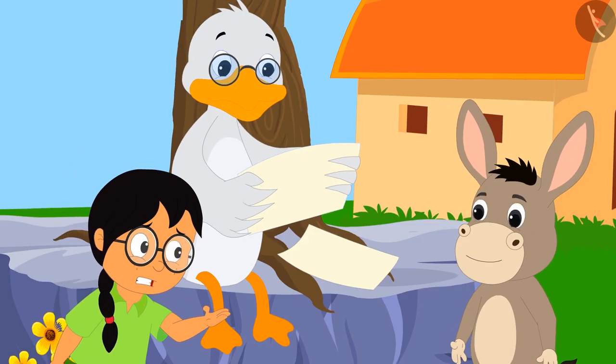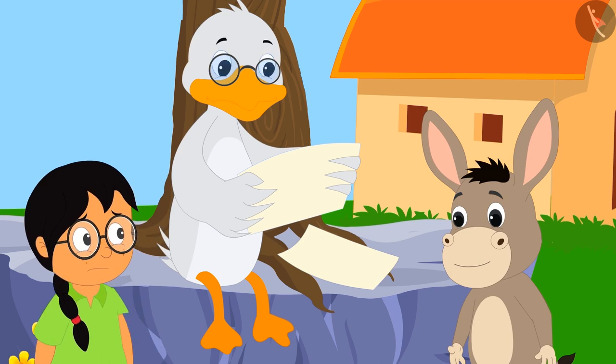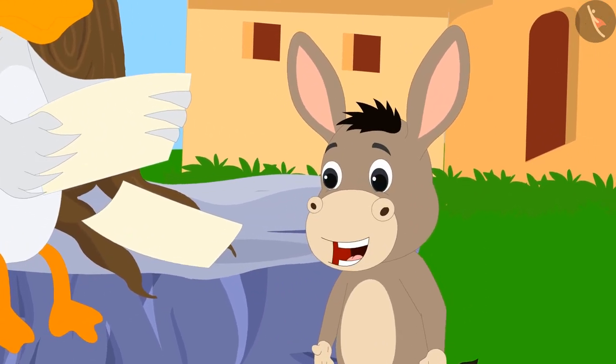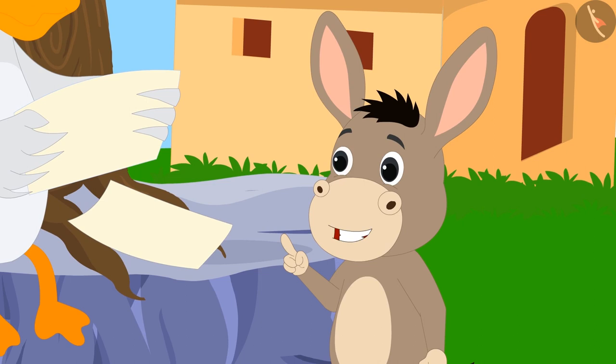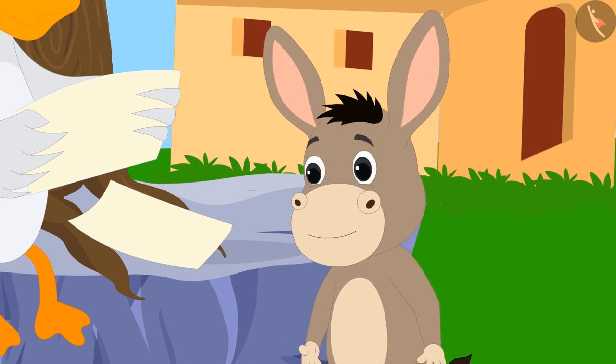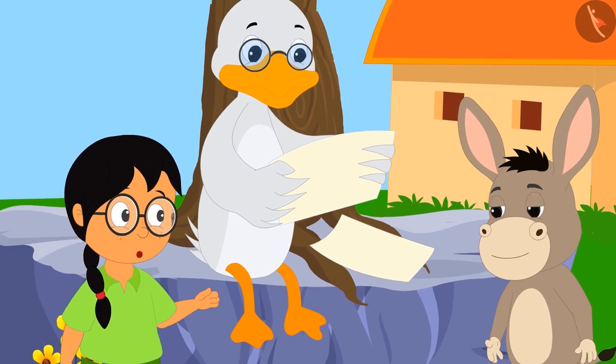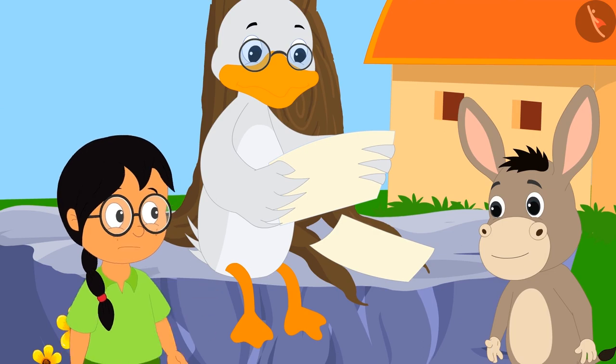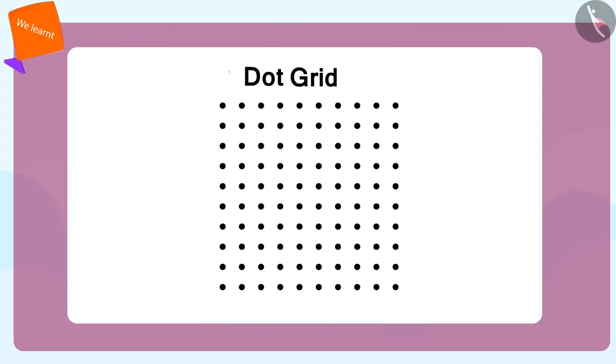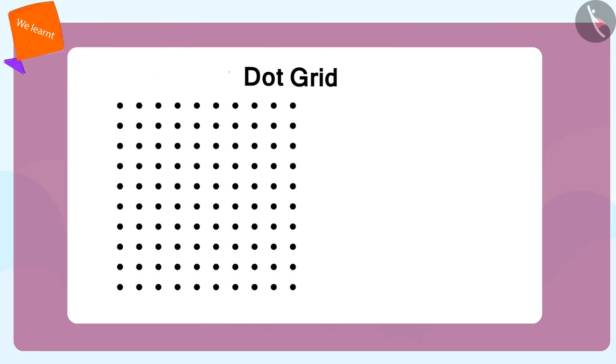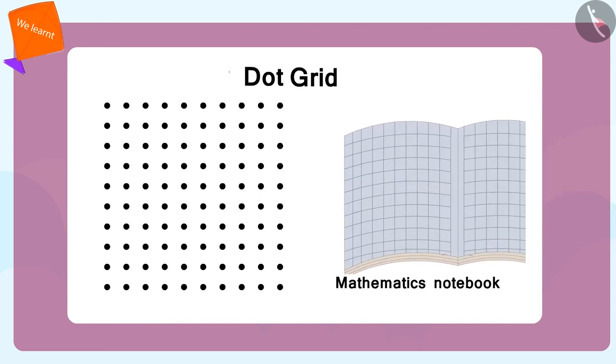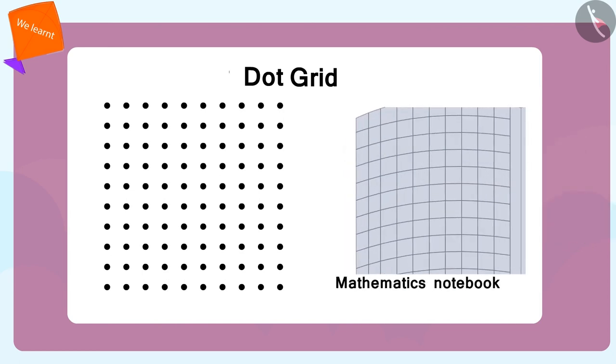But how did you manage to make such a perfect shape? The secret of my good shape is a dot grid, Bola said. Dot grid, what is that? I will explain.